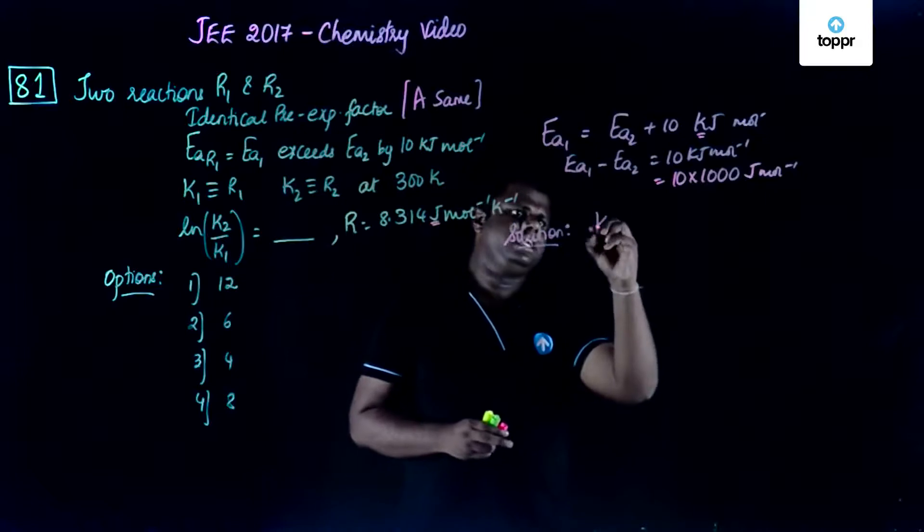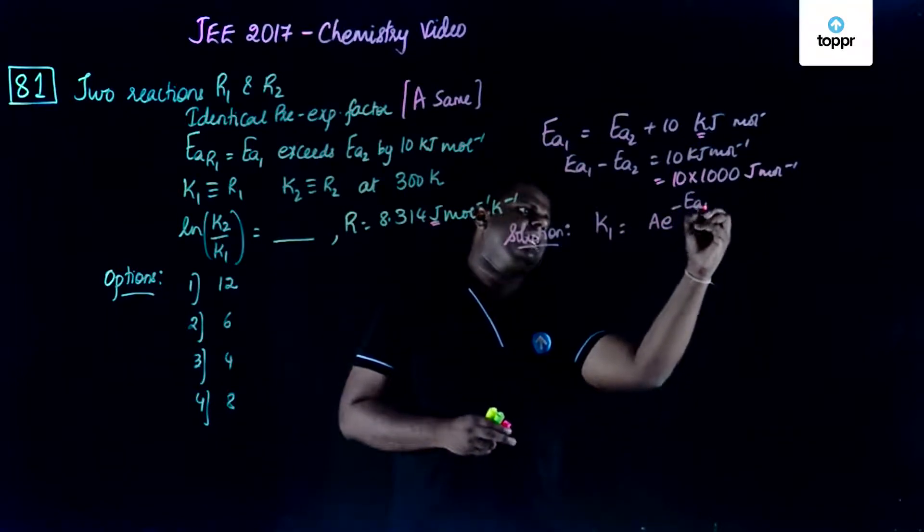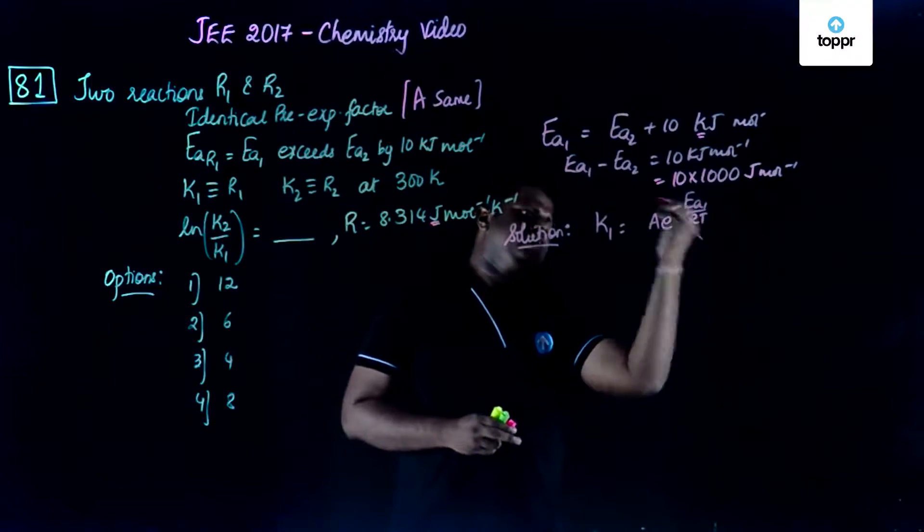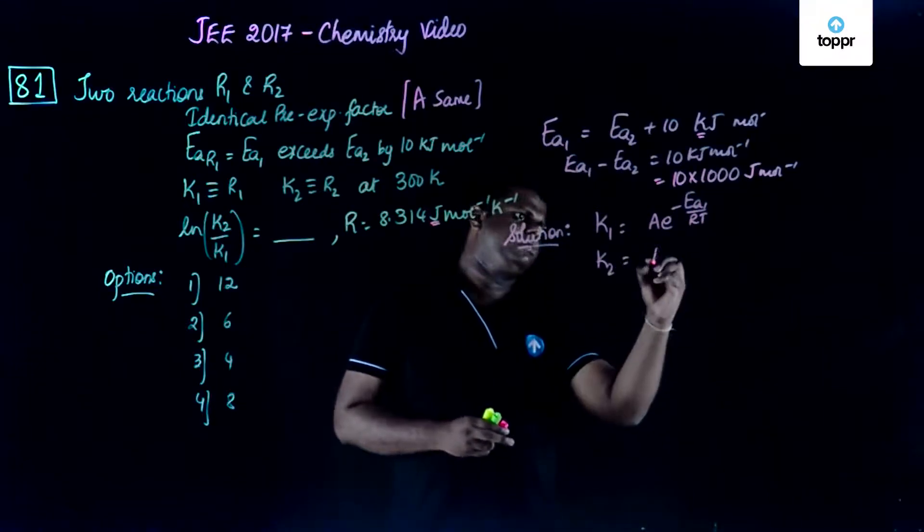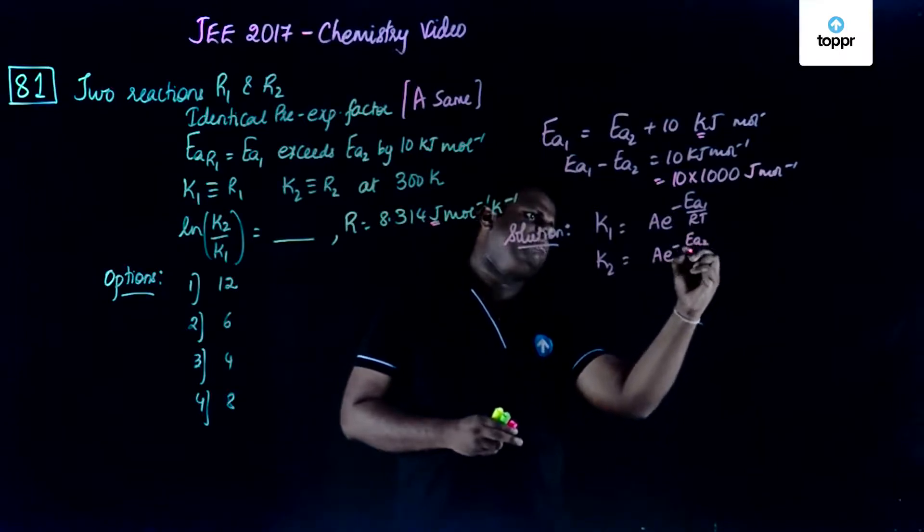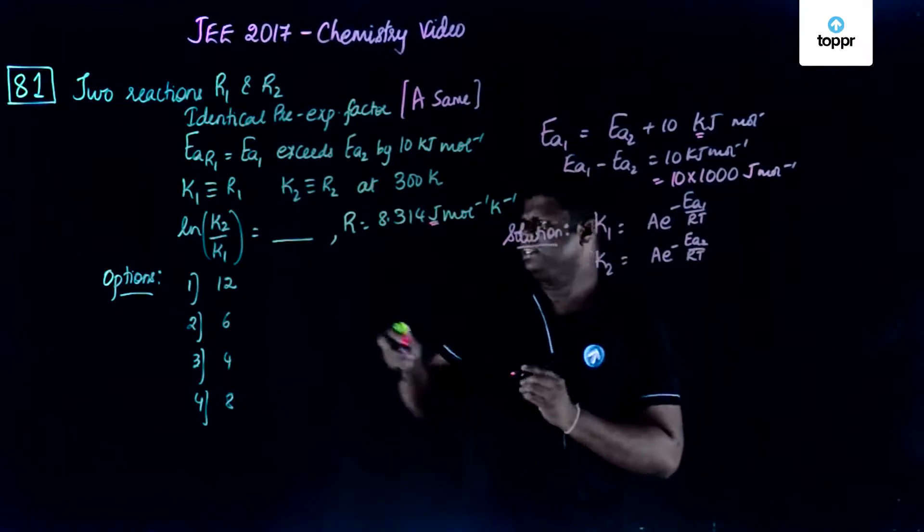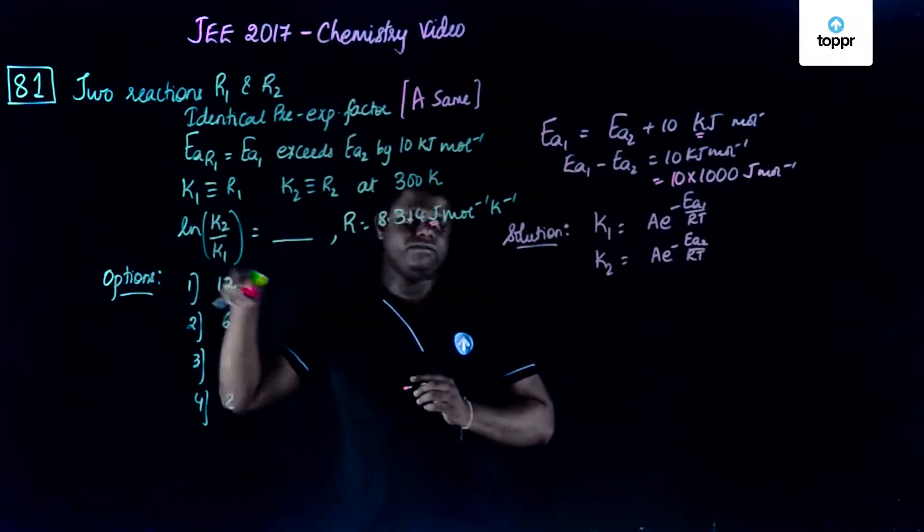k1 is equal to A times e raised to minus Ea1 upon RT. Similarly, k2 is equal to A times e raised to minus Ea2 by RT. Now you have k1 and k2 values.